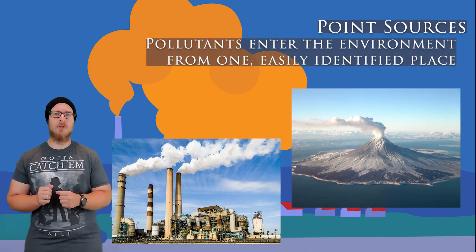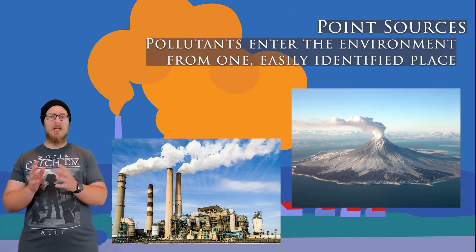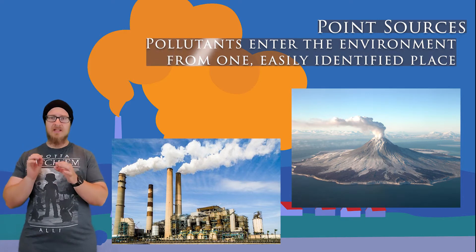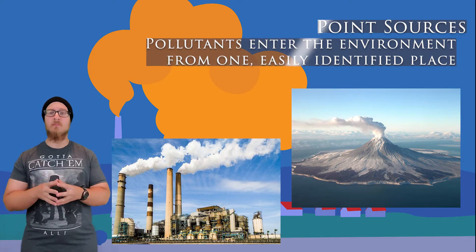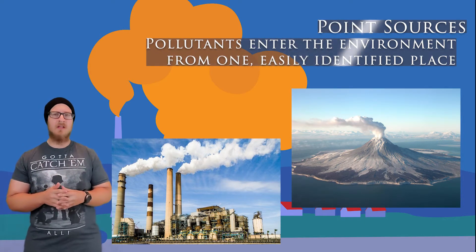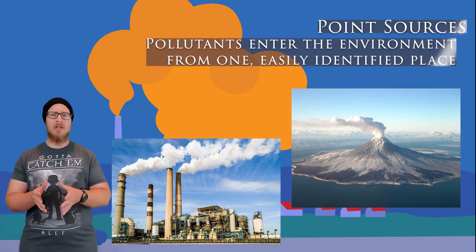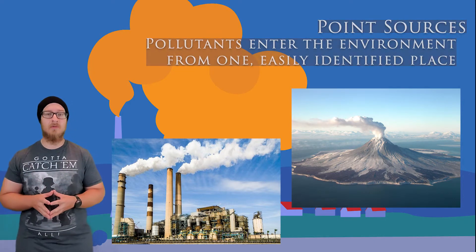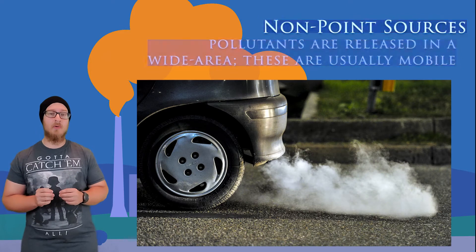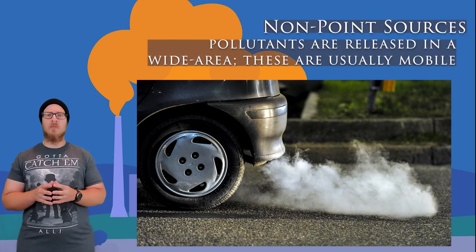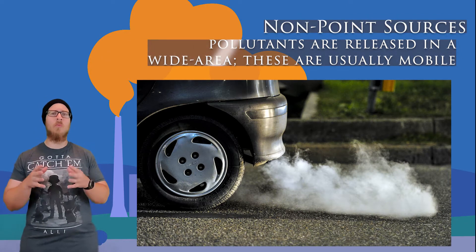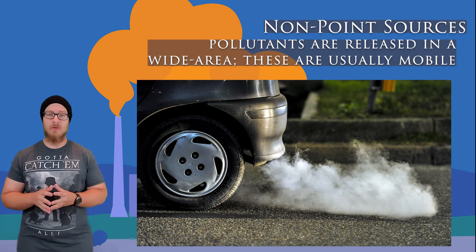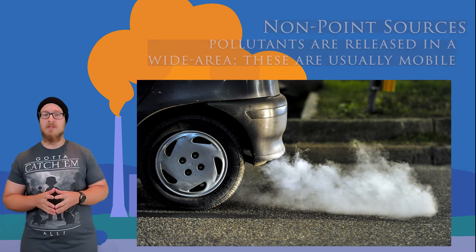There are many sources of pollution, but they're broken down into two big categories. Point sources of pollution are sources of any pollutant that enters the environment from one easily identified and confined place — things like factories, power plants, or even natural sources like volcanoes. Non-point sources are ways in which a pollutant is released over a wide area, and are usually mobile sources like cars or boats.